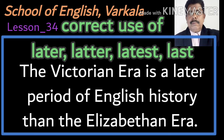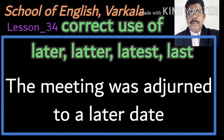Look at this sentence: 'The Victorian era is a later period of English history than the Elizabethan era.' Here, 'later' means a more advanced period. And: 'The meeting was adjourned to a later date,' where 'a later date' means a date in the future.